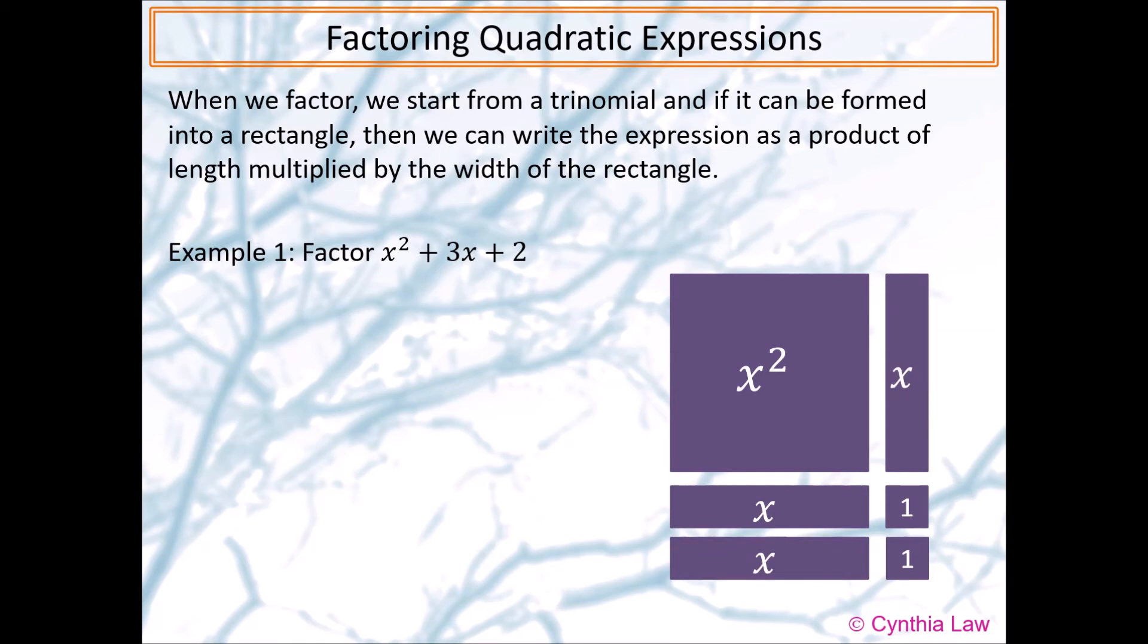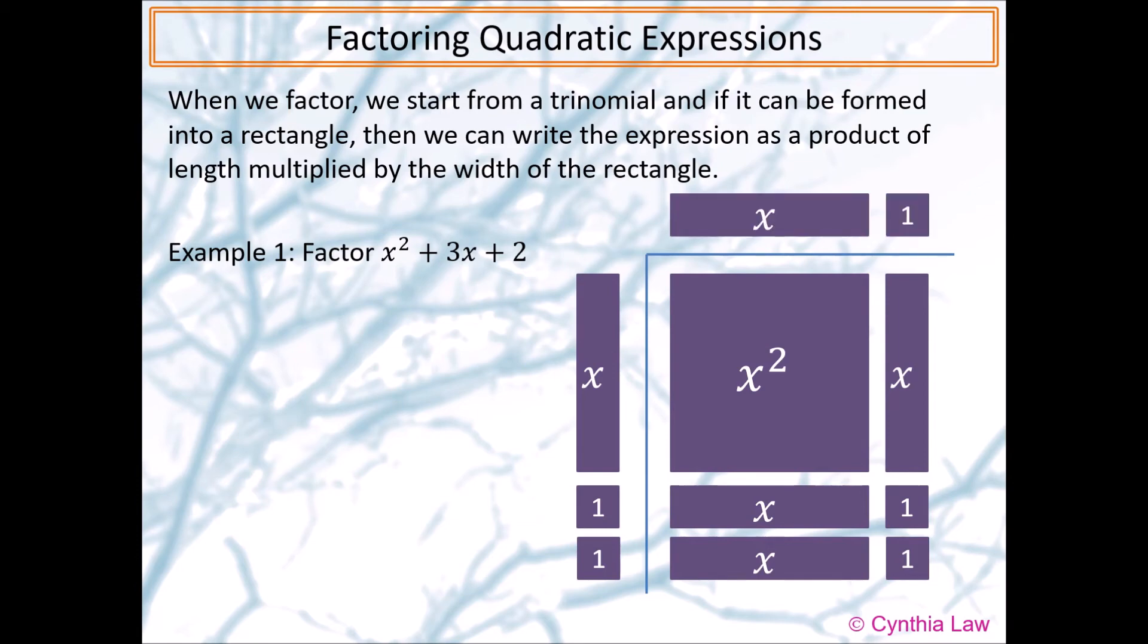Now, we have a rectangle. The length of this rectangle is x + 2. The width is x + 1. So, the factor form of x squared plus 3x plus 2 is (x + 2)(x + 1).